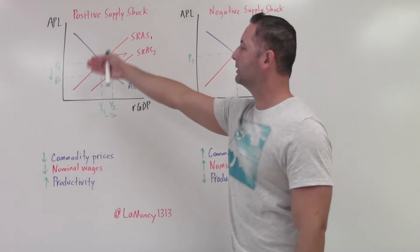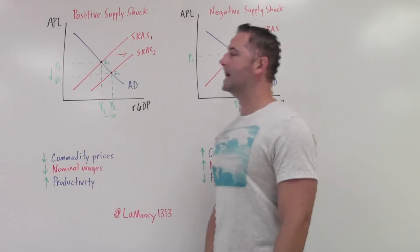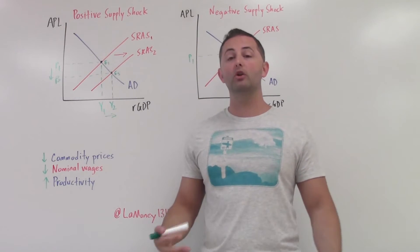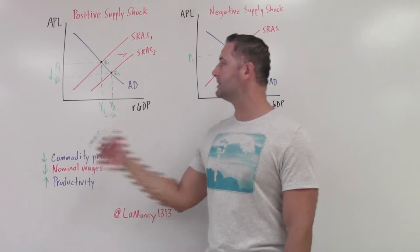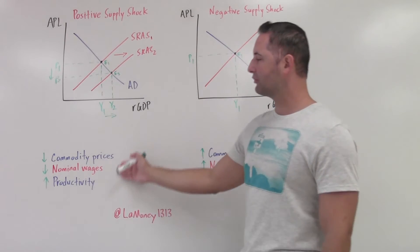So in this case, lower price, higher output. This is usually seen as a very positive, a very good outcome for an economy. So what would cause this? We have three main things.